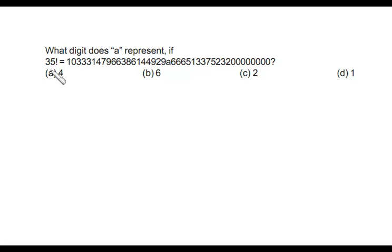What digit does 'a' represent if 35 factorial is this? Here 'a' is this. Now the problem can be solved easily if we apply the divisibility rule of 9, because 35 factorial should be definitely divisible by 9. And what is the divisibility rule of 9? That is, the sum of digits should be divisible by 9. So here this entire number is divisible by 9.